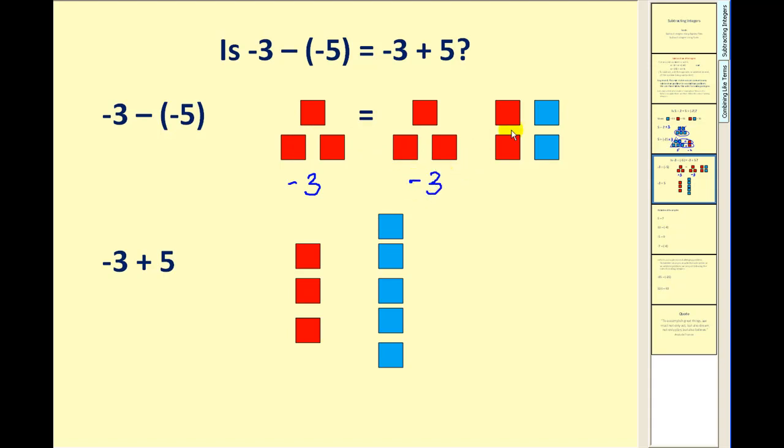This is still negative 3, but over here we have a red square and a blue square which we said was equal to 0. So these two would give us 0. These two would equal 0. So essentially these 4 squares represent a 0.